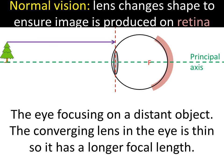Light from the top of the object comes parallel to the principal axis, then changes direction through the lens, through the focal point, and hits the back of the retina. Light from the top also comes through the centre and we get an image produced. This image is a real, inverted, reduced image.